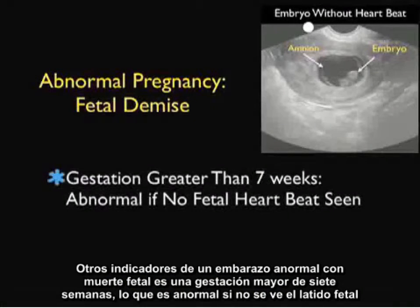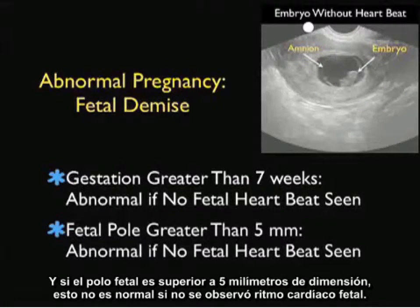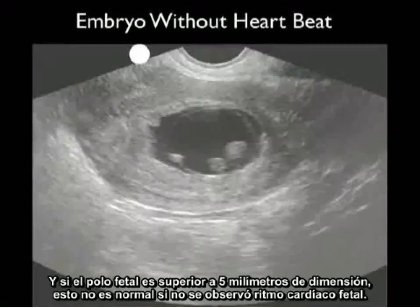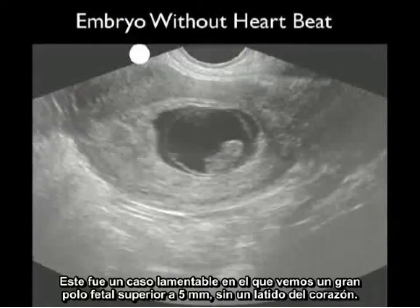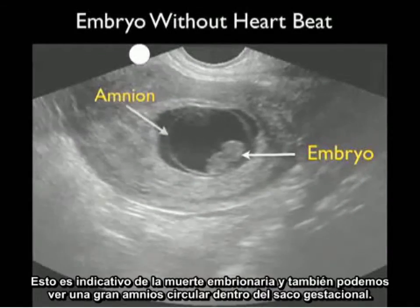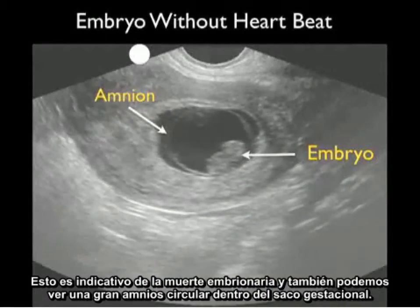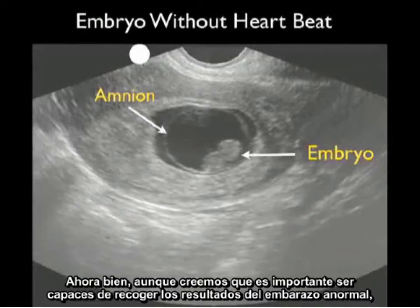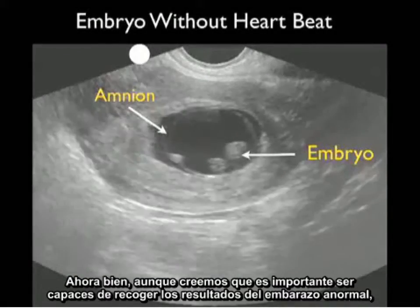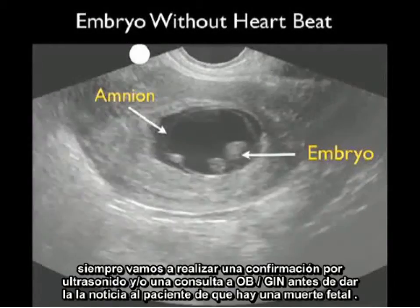Other indicators of an abnormal pregnancy with fetal demise include a gestation greater than 7 weeks without a fetal heartbeat, and a fetal pole greater than 5 millimeters without a heartbeat is also abnormal. This was an unfortunate case with a large fetal pole greater than 5 millimeters without a heartbeat, indicative of embryonic demise, with a large circular amnion also visible within the gestational sac. While it's important to pick up findings of an abnormal pregnancy, I always get a confirmatory ultrasound and/or OBGYN consultation before giving the patient the news of fetal demise.